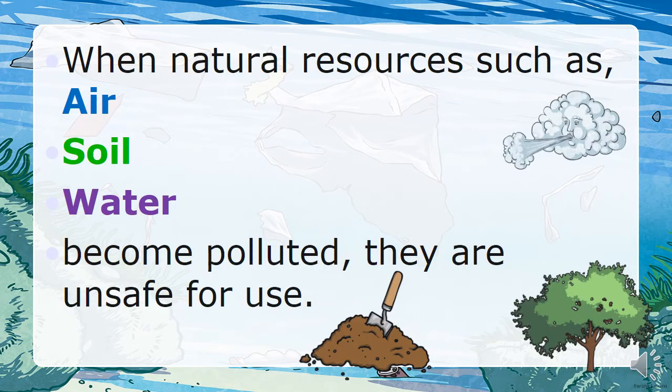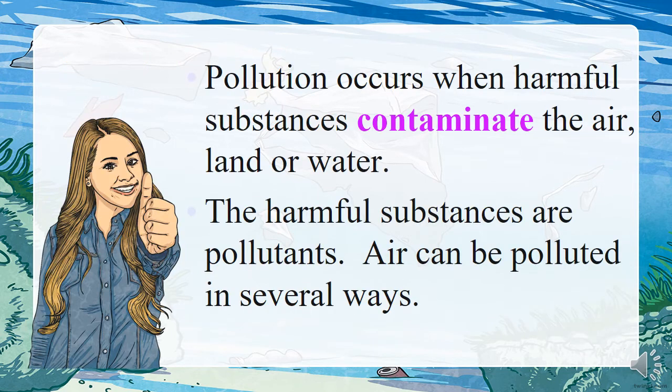When natural resources such as the air, the soil, and the water become polluted, they are unsafe for us. Pollution occurs when harmful substances contaminate the air, the land, or the water. These harmful substances are called pollutants.